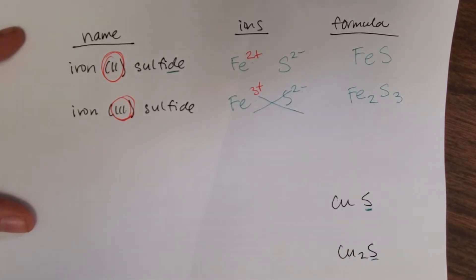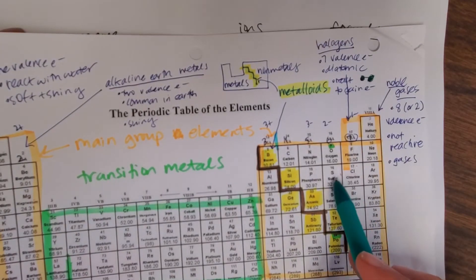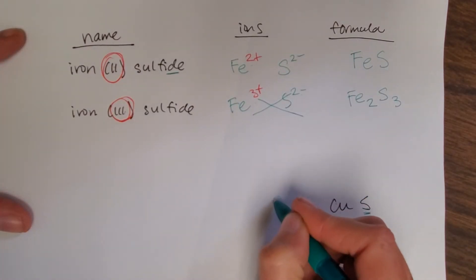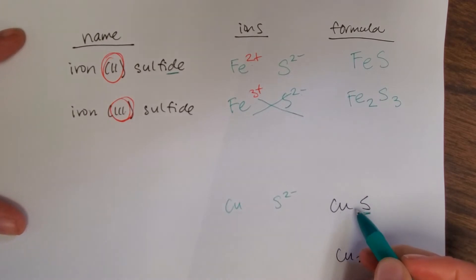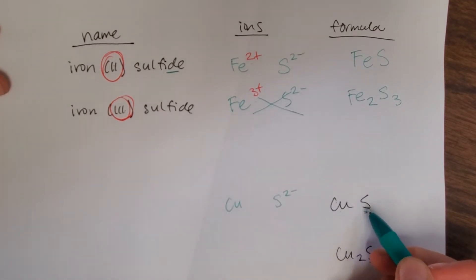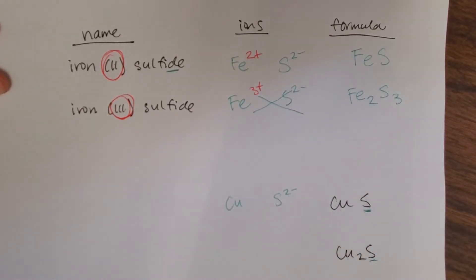Remember sulfur was easy because we have it on the periodic table. Sulfur when it's an ion is sulfide and it'll always be negative two. So I know on this that I have S²⁻, and then I know that I have the one copper ion here. The one copper ion has to balance out the charge of the sulfide here.